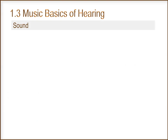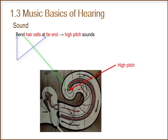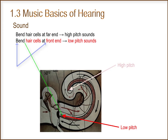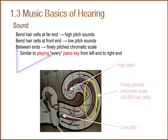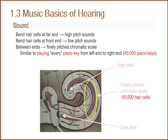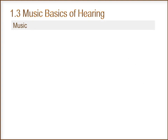We'll continue with sound. When the hair cells at the far end are bent, we hear high-pitched sounds. When the hair cells at the front end are bent, we hear low-pitched sounds. Between the ends is a finely-pitched chromatic scale. Our chromatic scale is similar to playing every piano key from left end to right end, but there would be 40,000 piano keys.